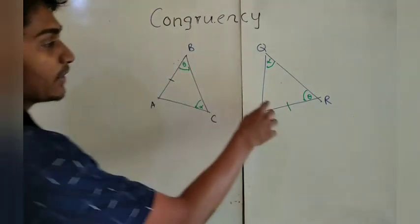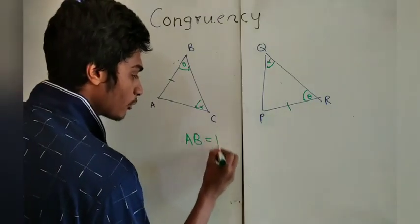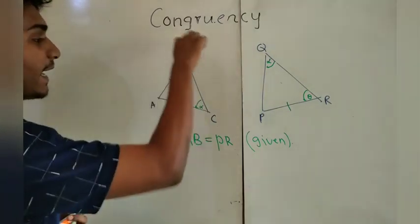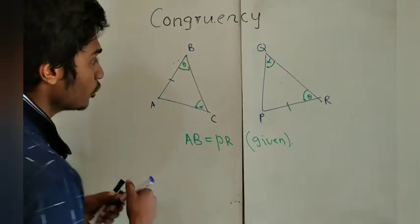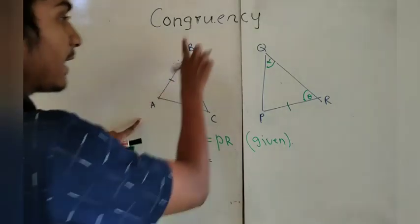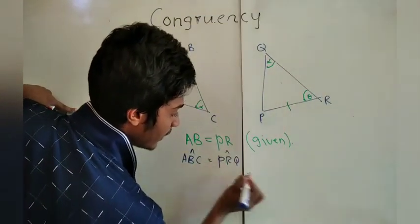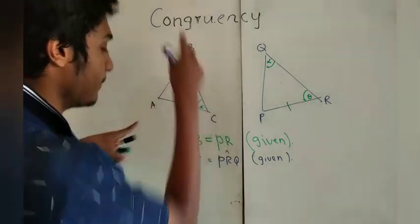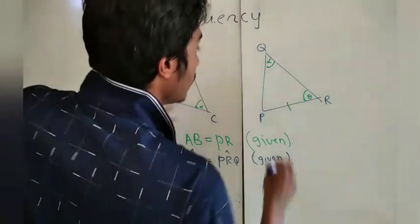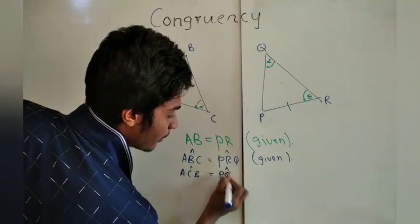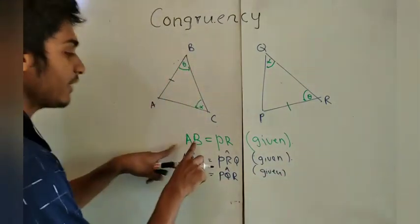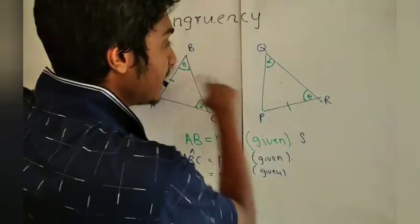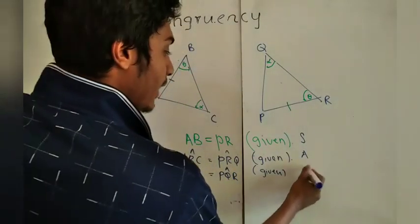Now let's start the proof. AB is equal to PR — that has been given. Angle ABC is equal to angle PRQ — that is also given. Angle ACB is equal to angle PQR, both being alpha — that is also given. So we have shown one side is equal and two angles are equal.